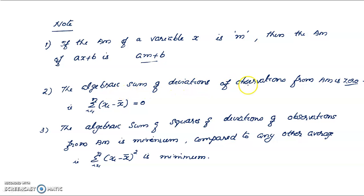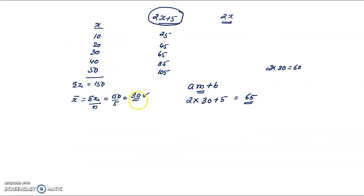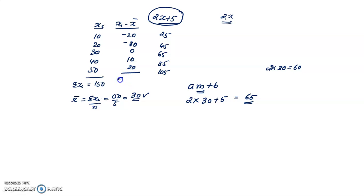An important property: the sum of deviations of observations from the arithmetic mean is zero. That is, Σ(xi − x̄) = 0. With x̄ = 30 and observations {10, 20, 30, 40, 50}: (10−30)=−20, (20−30)=−10, (30−30)=0, (40−30)=10, (50−30)=20. The sum is zero.